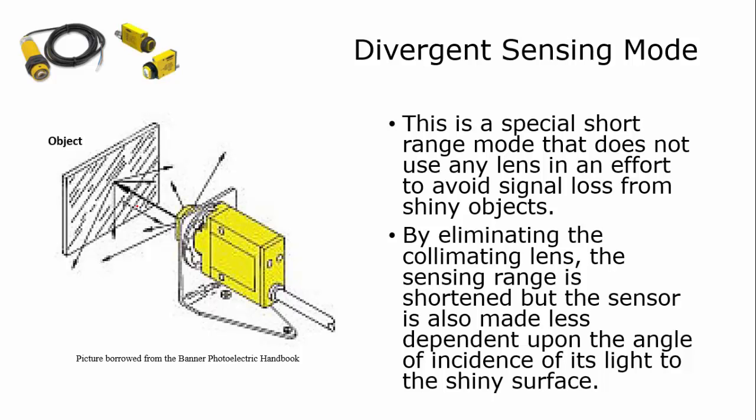It's another proxying mode, divergent, meaning that it has no lens and you have to get much closer to the object that you're sensing.